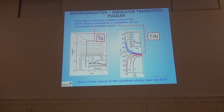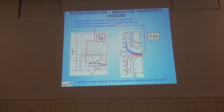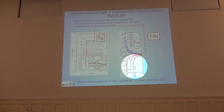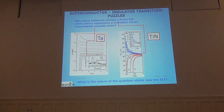Immediately two puzzles were posed. The first was: what is the nature of these exotic phases? It was recognized that those are quantum coherent phases, and even the superconductivity was not quite usual superconductivity. The second question was why some materials exhibit a direct transition from superconductor to insulator, while others go through an intermediate metallic phase — called the quantum metal, Bose metal, or now 'failed superconductivity.' It was a mystery why we may have two different scenarios.